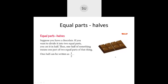One half of something means one part of two equal parts of that thing. When you have a whole divided into two equal parts, half means one part of those two equal parts. Half can be written as one by two. The two represents the total number of equal parts and the one represents one part in that.